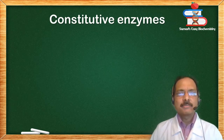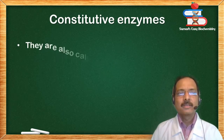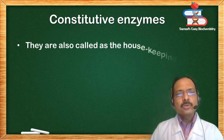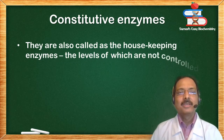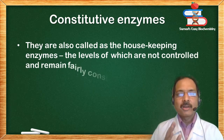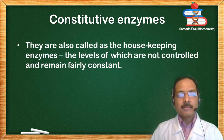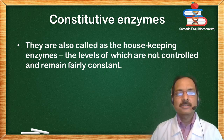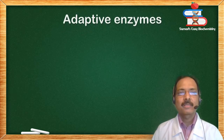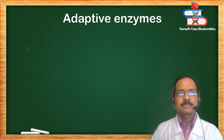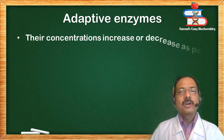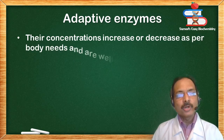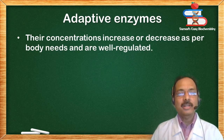Constitutive enzymes, also called housekeeping enzymes: the levels of these enzymes are not controlled and remain fairly constant. Adaptive enzymes: their concentrations increase or decrease as per body needs and are well-regulated.